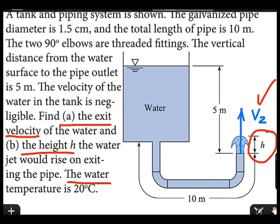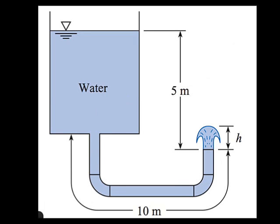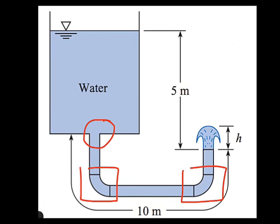The water temperature is 20 degrees C. I see viscous flow through this piping system, and I see three sources of head loss. Source 1 is associated with flow at the inlet. Source 2 is associated with flow through these threaded elbows. Source 3 is associated with viscous flow in the pipe itself.